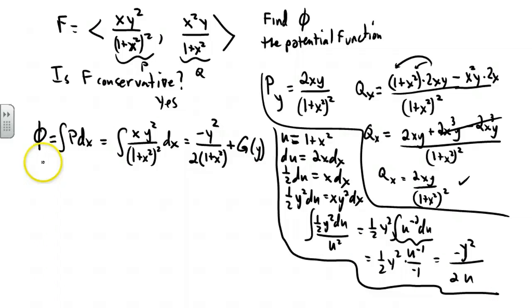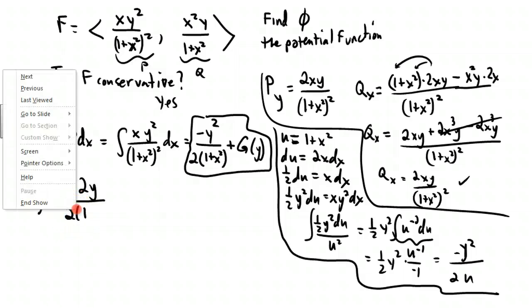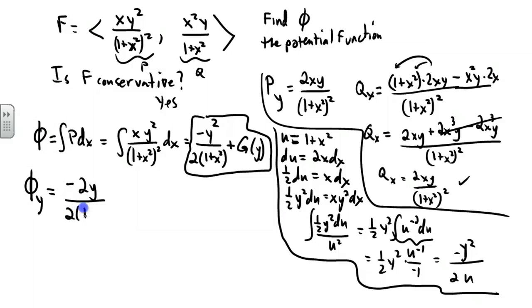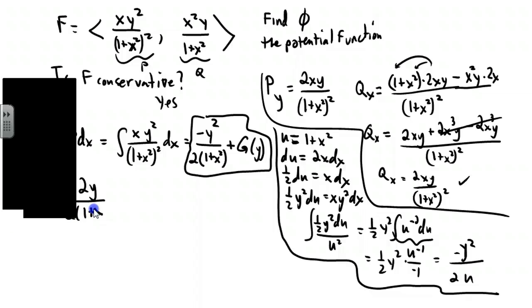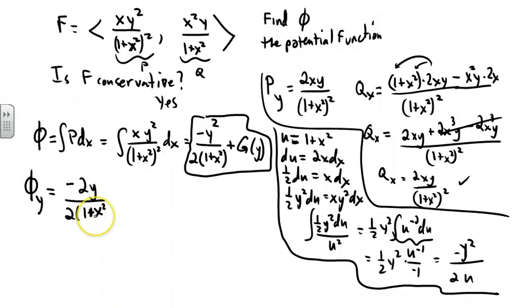Now, instead of integrating q with respect to y, we'll do the following. This is exactly what phi is, and so I'm going to take the derivative of that with respect to y. And what I'm going to get is minus 2y over the 2, 1 plus the x squared, plus g prime of y.